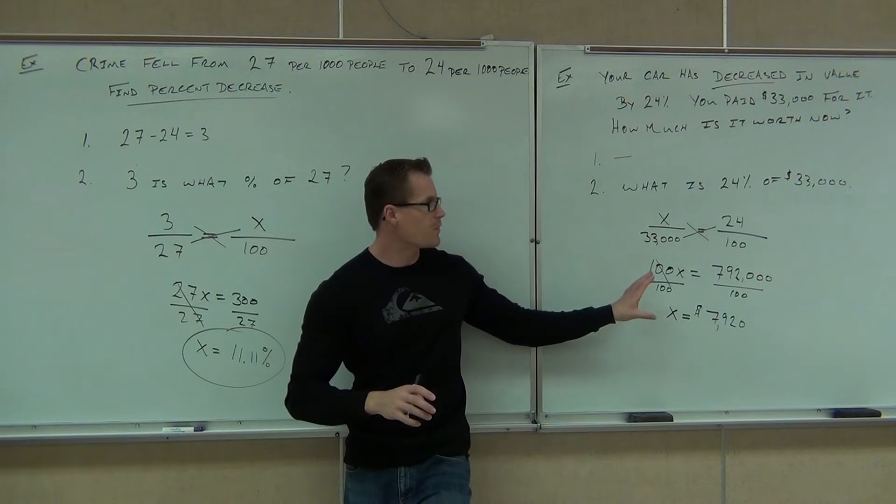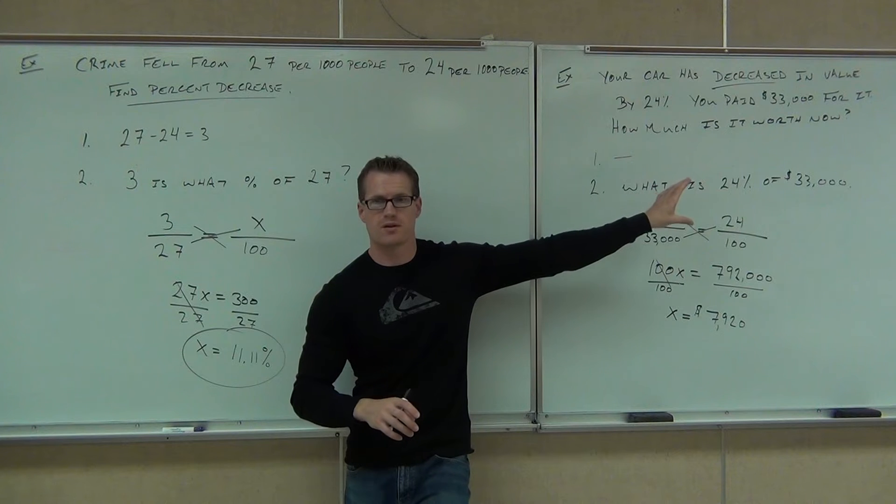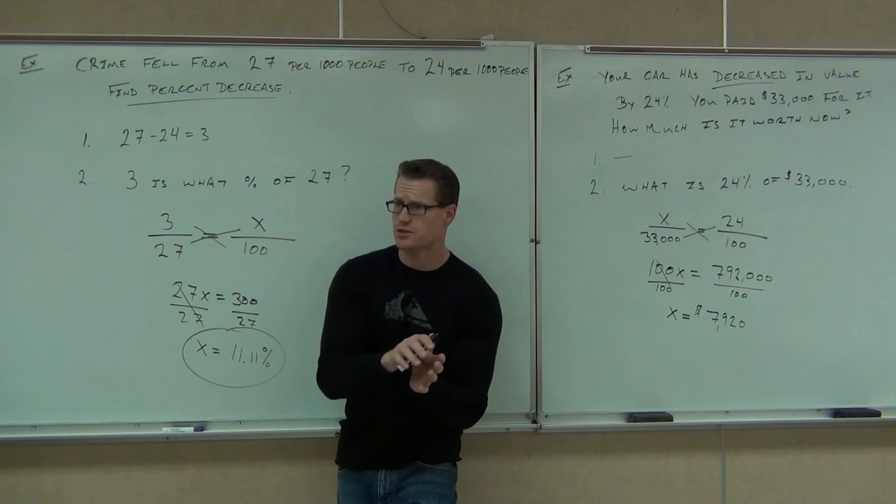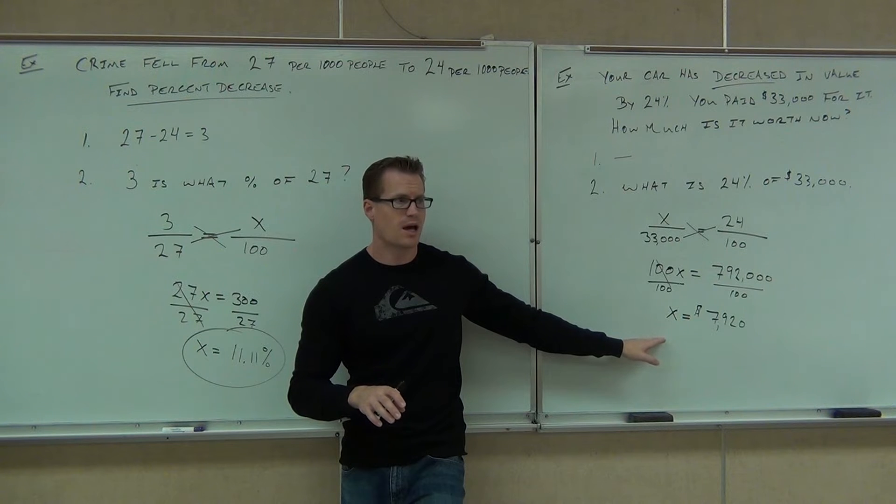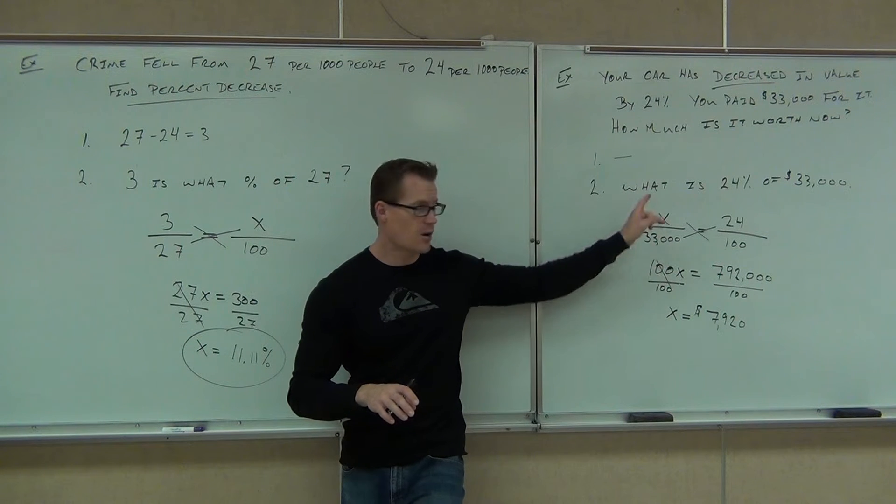All right, so you need to know that what this is, you found 24% of $33,000. You found what you've lost. This is how much money you've lost. Now, figure out for me how you find how much it's worth.